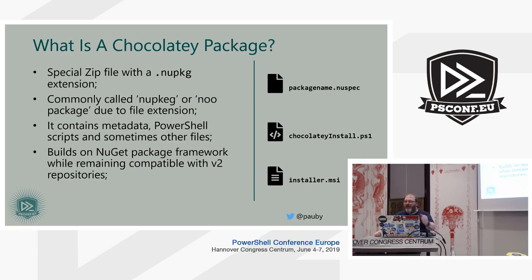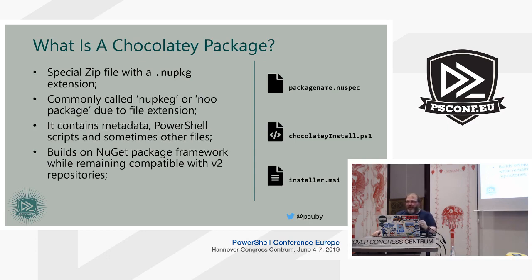The files in the package include packagename.nuspec — the metadata file, named after whatever your package is, e.g. googlechrome.nuspec. It contains metadata such as the ID, version, description, and other information. It also contains PowerShell scripts like chocolateyinstall.ps1. And it can contain other files too — an installer MSI, configuration files, certificates, or other PowerShell scripts. Whatever you need for your particular package, you can add in there. Chocolatey only cares about the files it cares about; anything else is up to you.